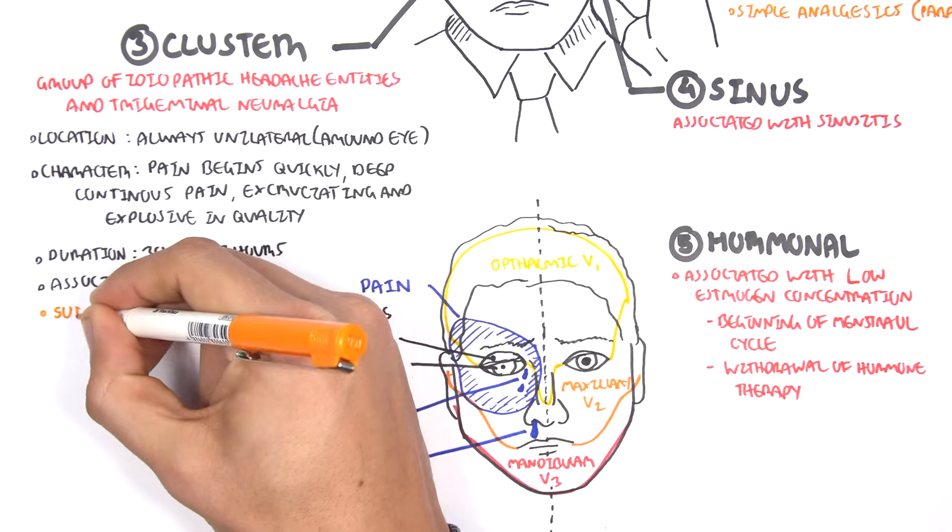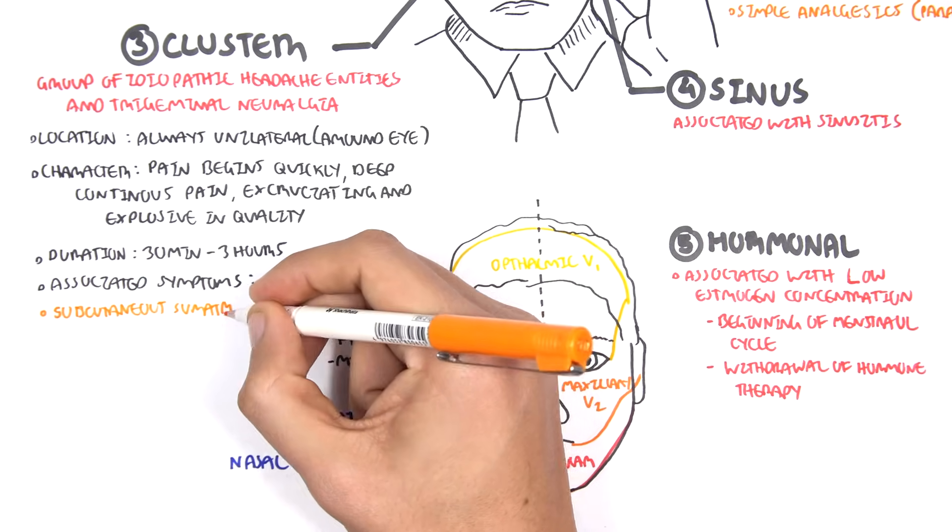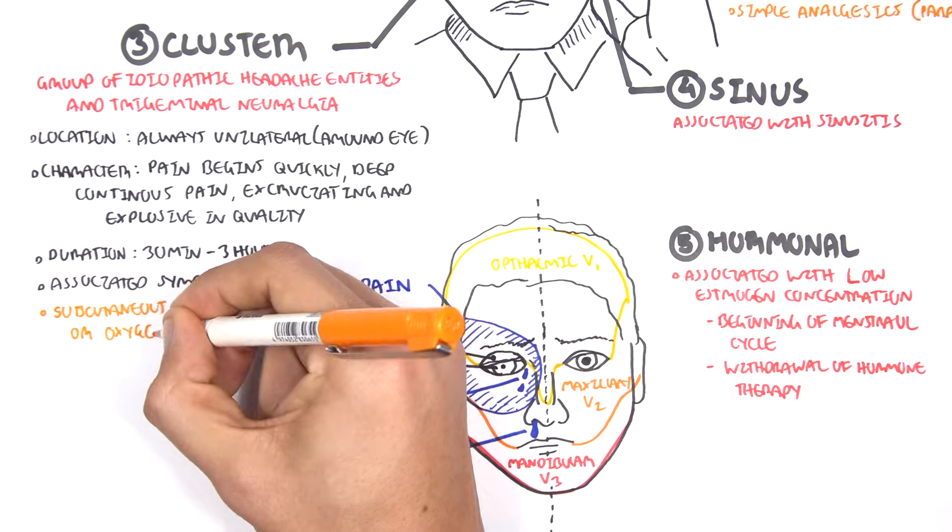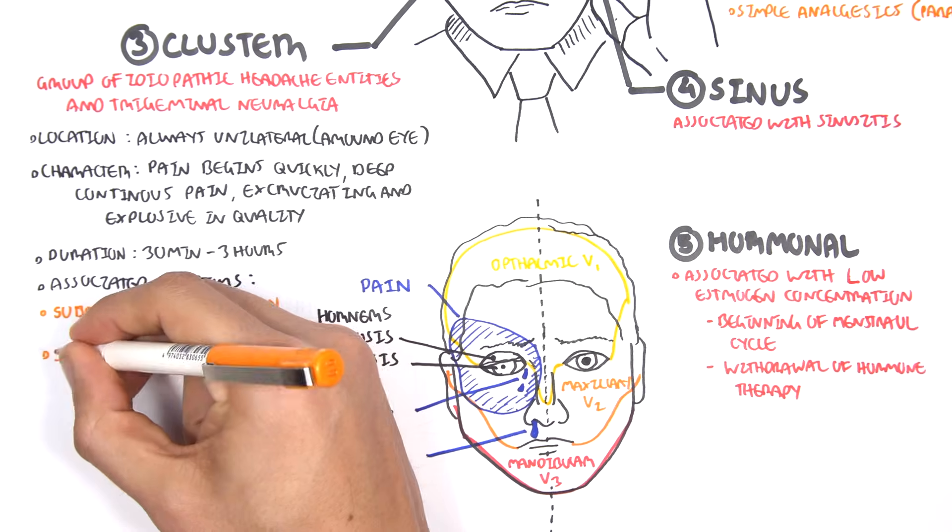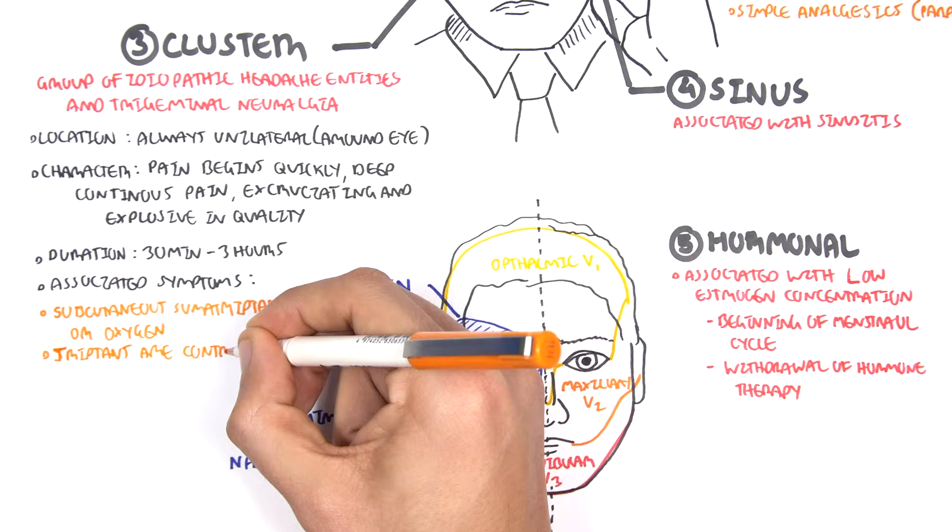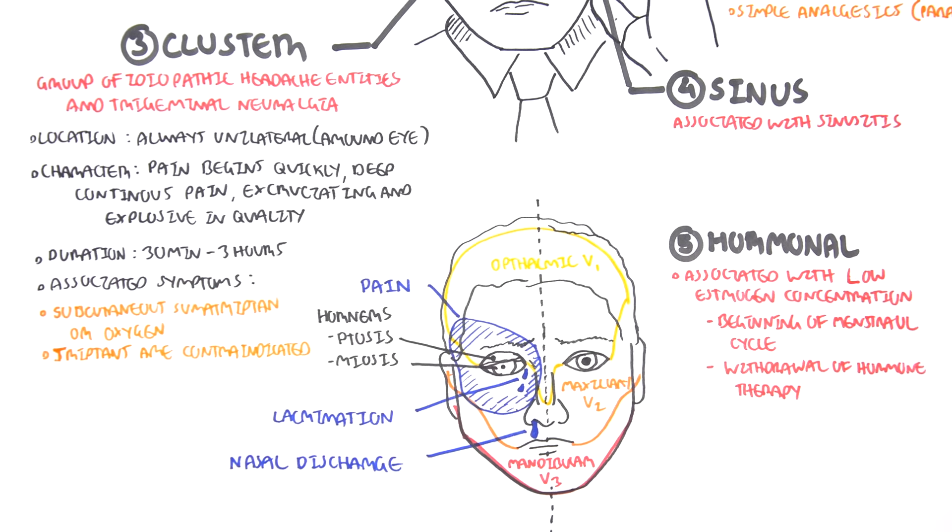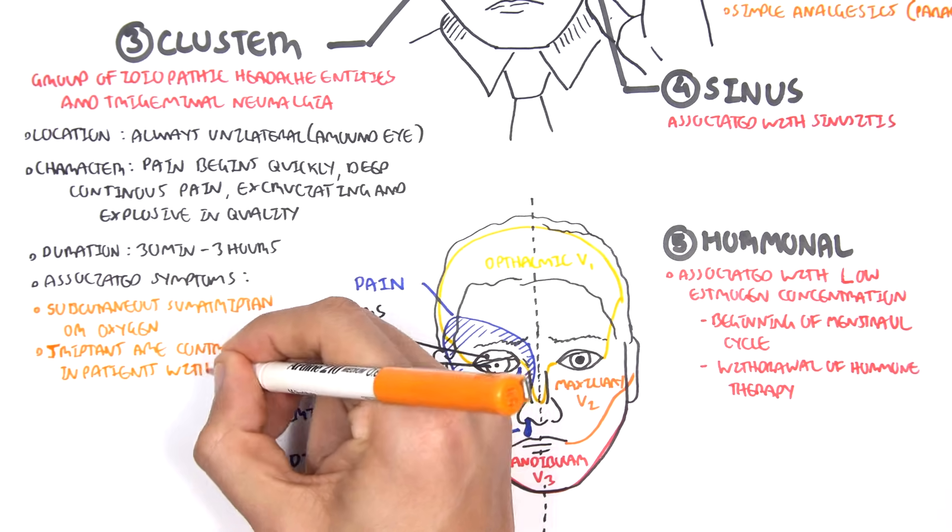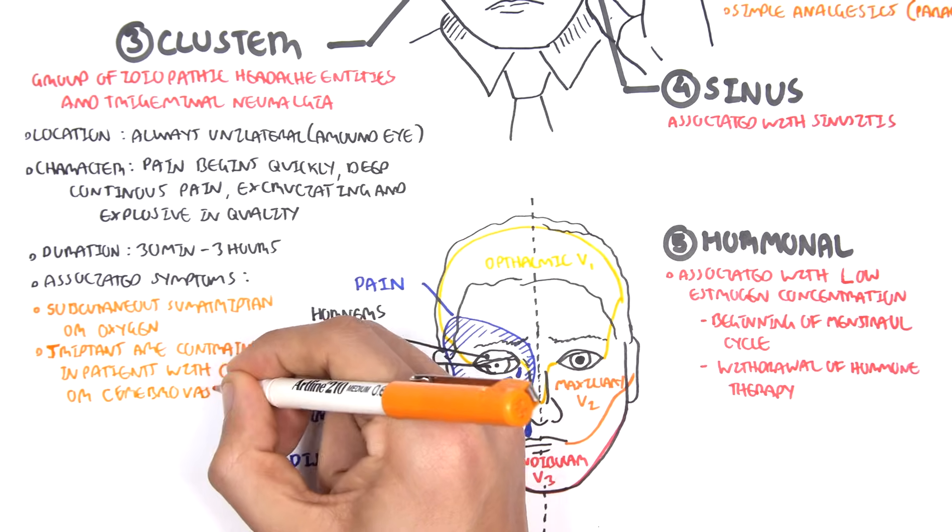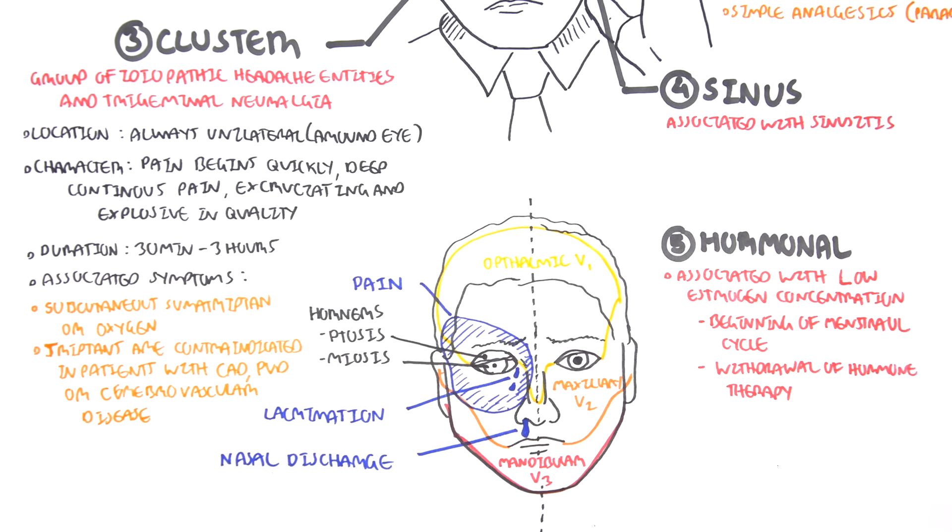For cluster headaches, subcutaneous sumatriptan or oxygen can be given, and this is to prevent vomiting in general. Triptans, which include sumatriptan, are actually contraindicated in certain patients with coronary artery disease, peripheral vascular disease, or cerebrovascular disease.